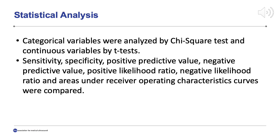The statistical analysis for this project is as follows. Categorical variables were analyzed by chi-squared tests and continuous variables by t-tests. Sensitivity, specificity, positive predictive value, negative predictive value, positive likelihood ratio, negative likelihood ratio, and areas under receiver operating characteristics curves were compared.